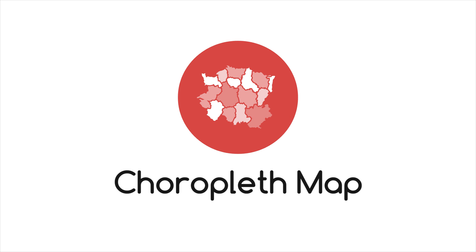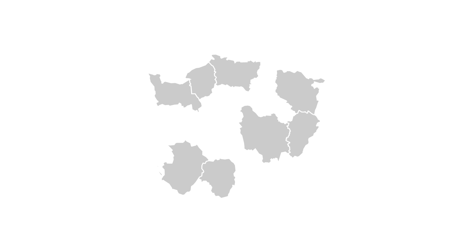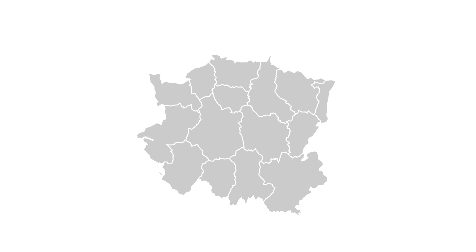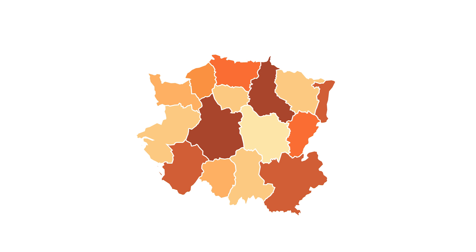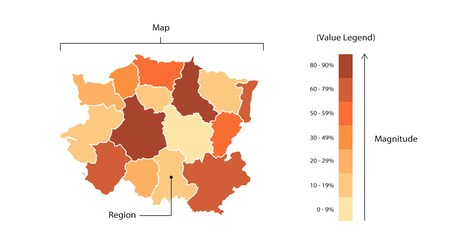Let's look at choropleth maps. Choropleth maps display divided geographical areas or regions that are coloured, shaded or patterned in relation to a data variable. This provides a way to visualise values over geographical areas, which can show variation or patterns across the displayed location.